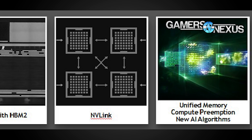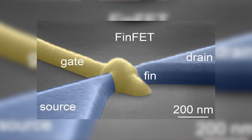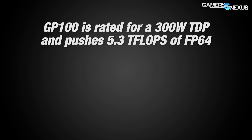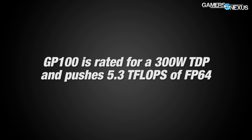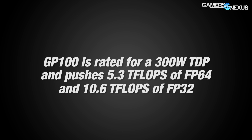FinFET transistors use a three-dimensional design, extruding a fin to form a drain and source on the gate, with the gate encircling the transistor's fins. GP100 has a transistor count totaling 15.3 billion across its 610mm² die. GP100 is rated for a 300W TDP and pushes 5.3 teraflops of FP64 double precision compute performance and 10.6 teraflops of FP32.